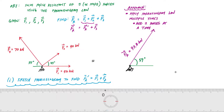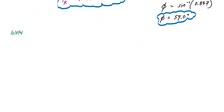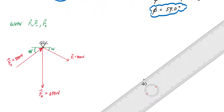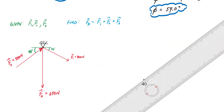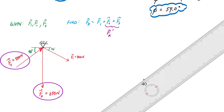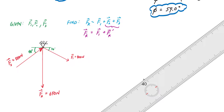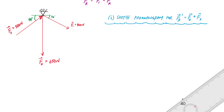Let's try one more example. Given three forces acting on a pin, I want to find the force resultant of all three. Again, we take two vectors at a time. I'll start by adding F2 and F3 — calling that FR prime — and then add F1 to FR prime to get the total resultant. The order doesn't matter; you could start with any two.